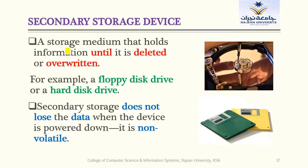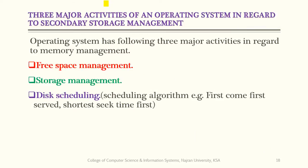Secondary storage devices are device media that hold information until it is deleted or overwritten. Examples include floppy disk drives, hard disks, CDs, DVDs, and flash drives. These devices are non-volatile, meaning they will not lose data until we delete it. The operating system has three main responsibilities for secondary storage devices: free space management, storage management, and disk scheduling.